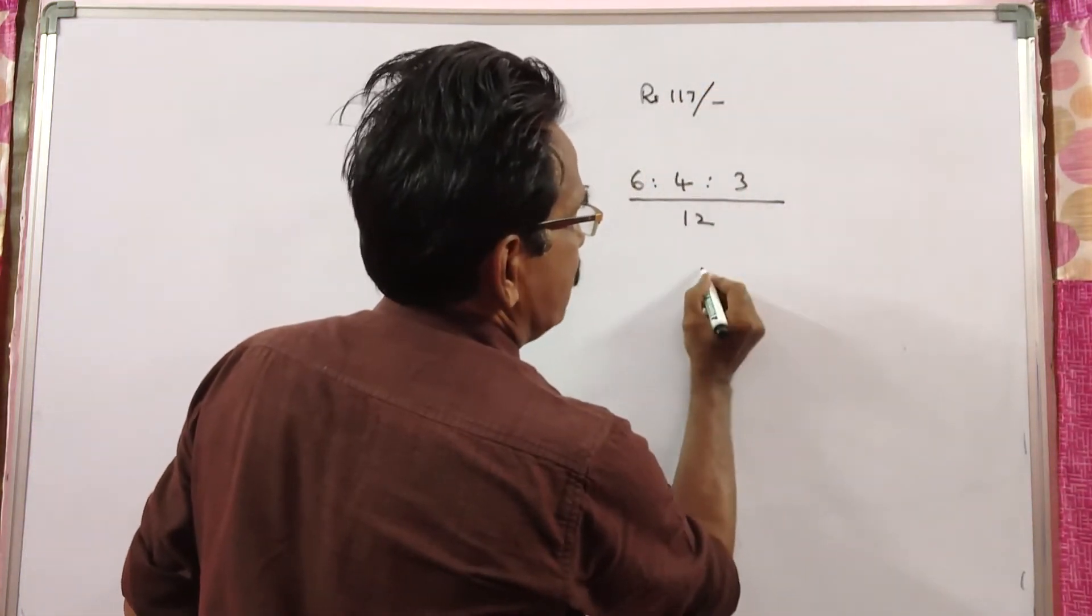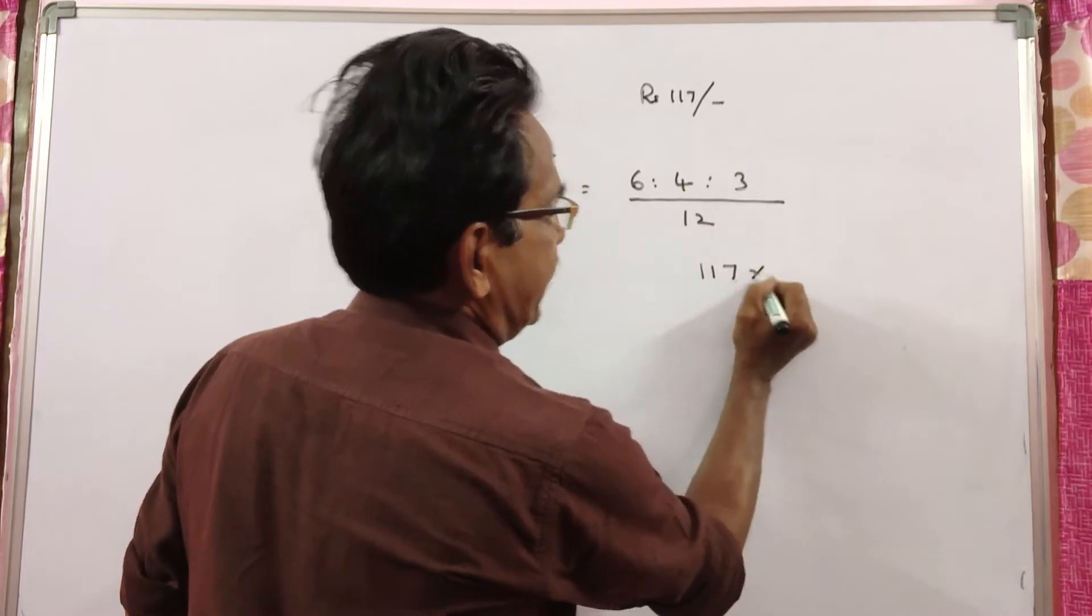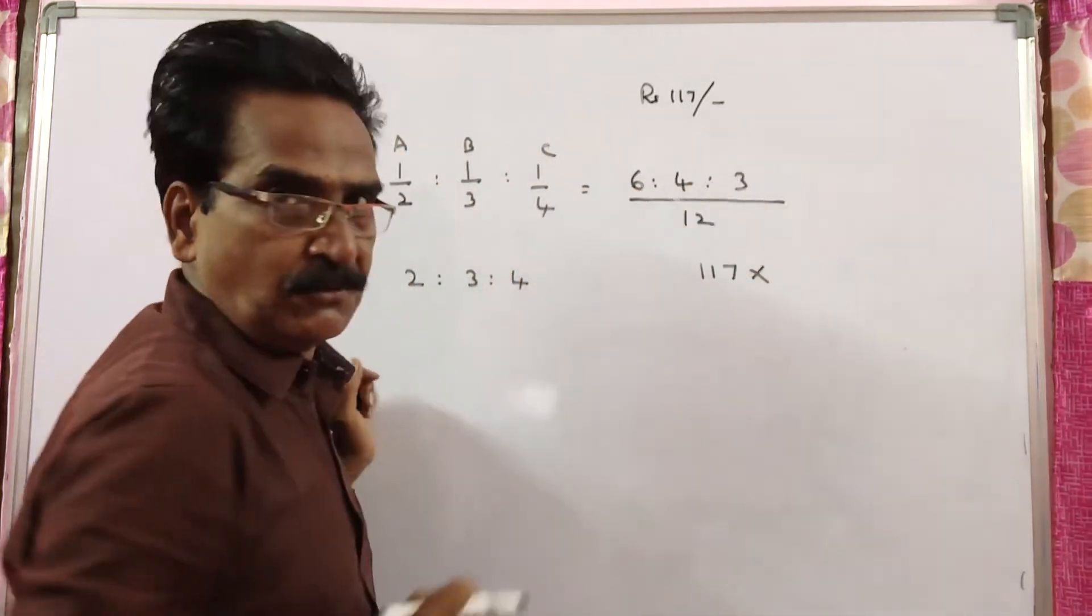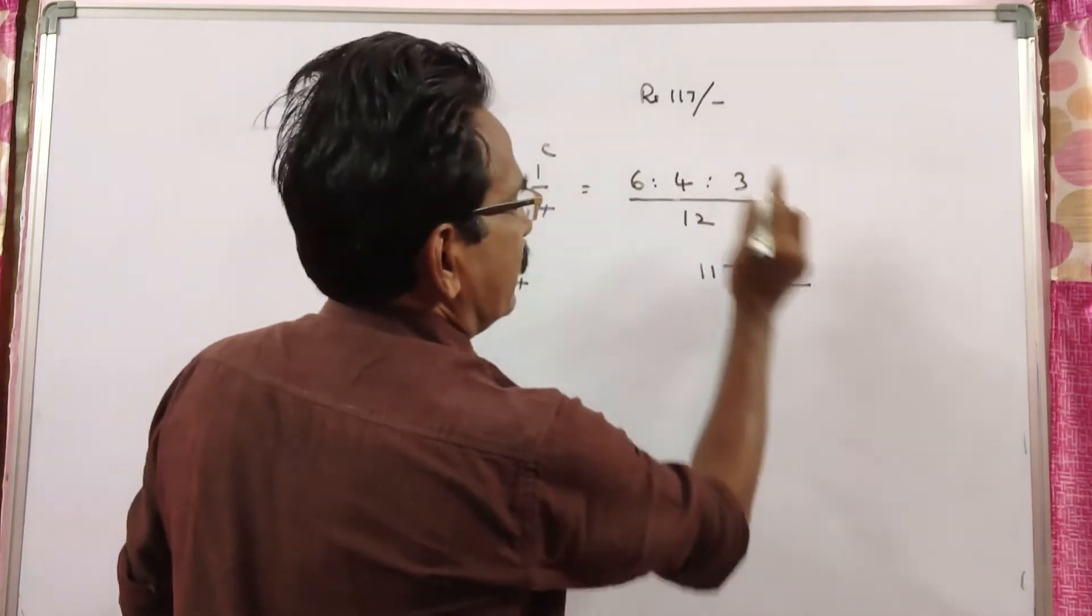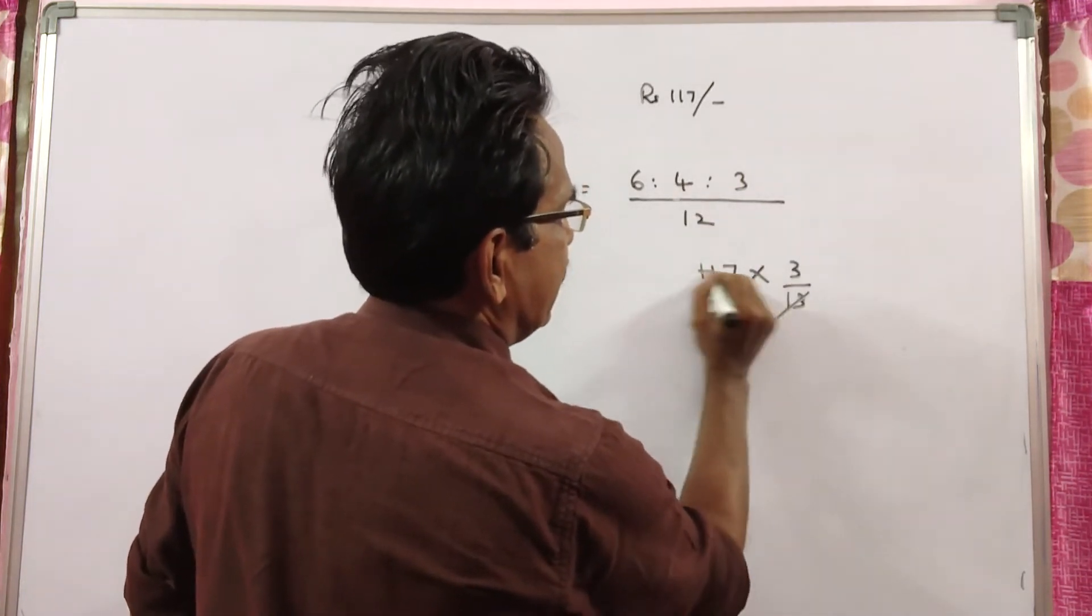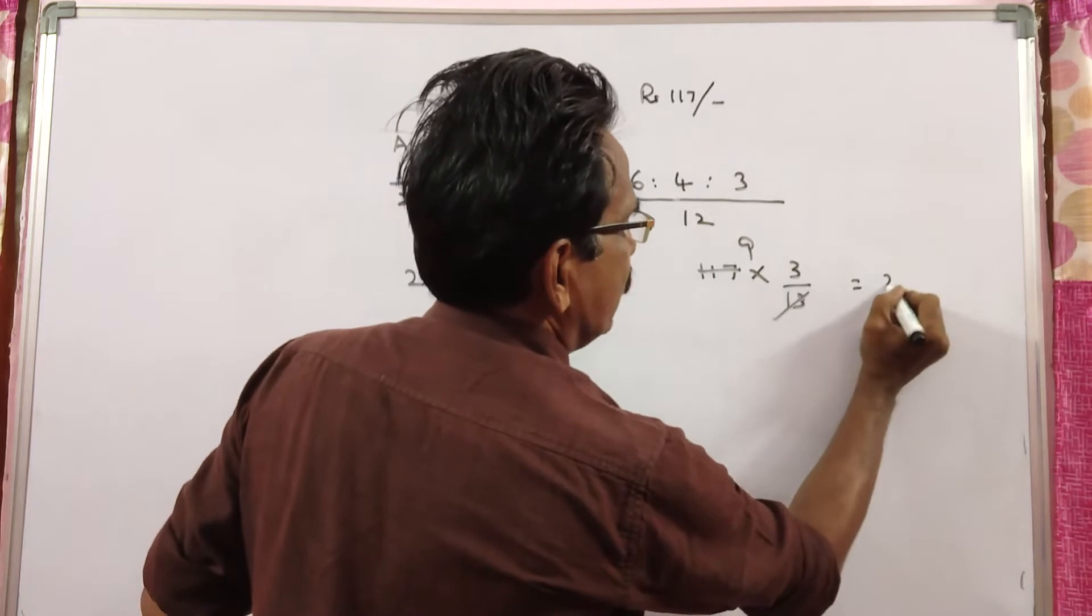If rupees 117 is divided in the ratio 6:4:3, C gets 3/13. That's 117 into 3/13 equals 9 times 3 equals 27.